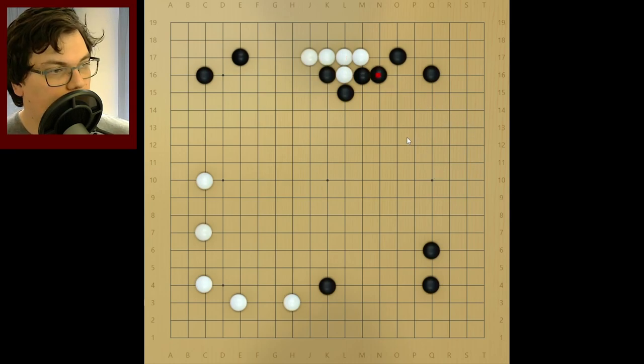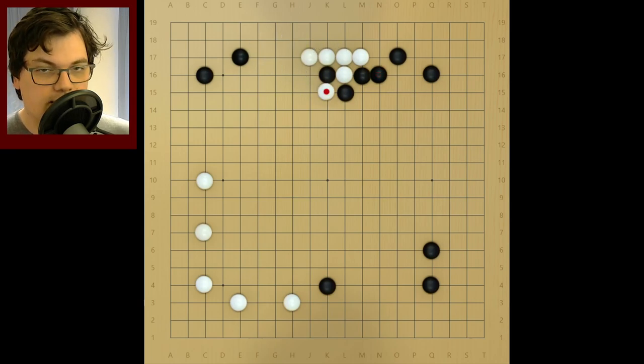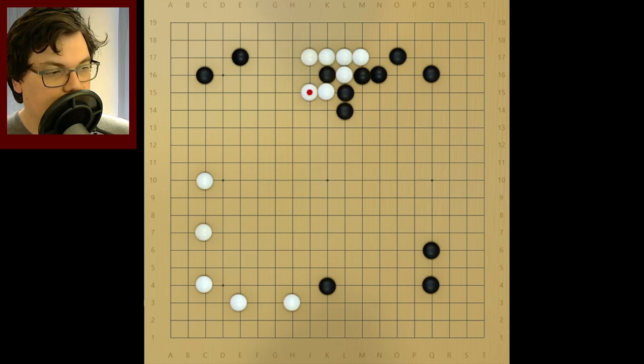Look at this nice wall that Black has built, and in return, White is pretty solid on this side. White is not completely alive, so what White does next is atari this stone. Black extends, solidifying his influence over this area. White has to extend to be solidly alive. White can omit this move. They're feeling very dangerous, but we better have plan to make another eye somewhere else.